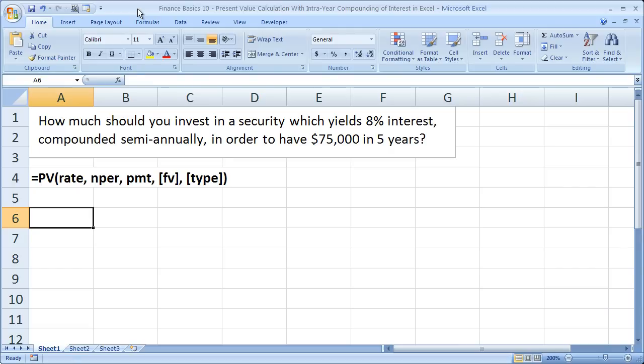So the question is, how much should you invest in a security which yields 8% interest compounded semi-annually in order to have $75,000 in 5 years?